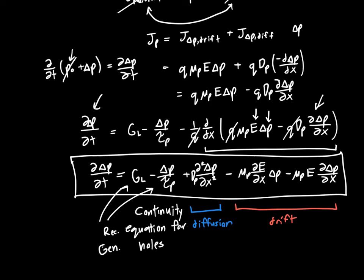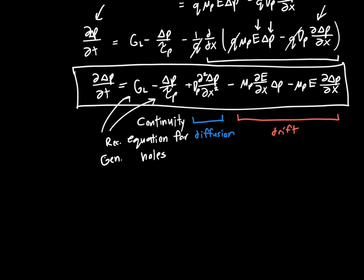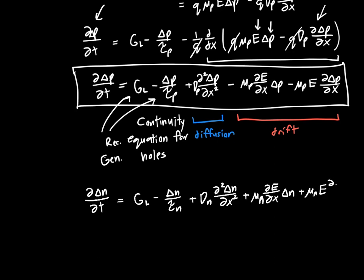We could redo this whole derivation for electrons, but I'm not going to because that would be kind of painful. I will just write it down here for completeness. The change in concentration of electrons is similarly GL minus delta N over tau N plus DN times d squared delta N dx squared. The only difference is in these drift terms - instead of being negative, they are positive: plus mu N d/dx times delta N, sorry this should be mu N, plus mu N E times d delta N dx. This monstrosity is our continuity equation for electrons.